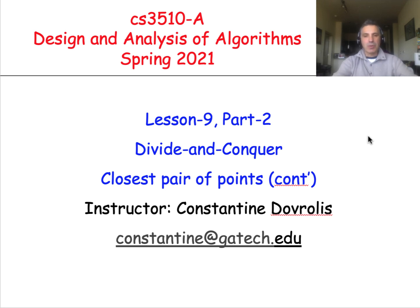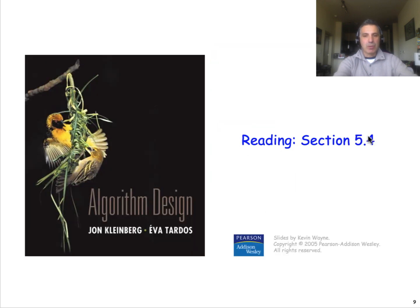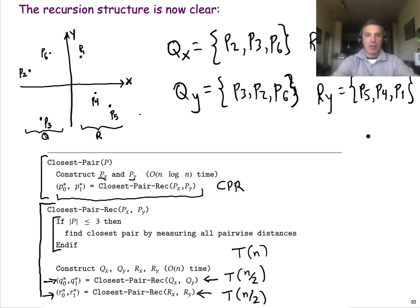This is the second part of our discussion about the closest pair of points problem. To remind you where we left things last time, we figured out how to split the points equally in two halves — the set Q and the set R — based on the x-coordinate, and we set up our basic recursive algorithm.